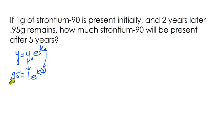Two years later, .95 remains. So now I've filled in everything from the problem into our equation, and now we're just going to solve for k like we did last time. So I have .95 equals e to the 2k.